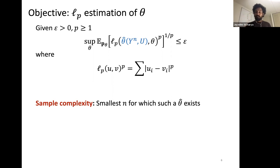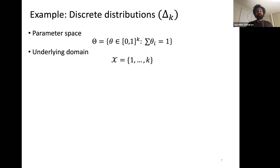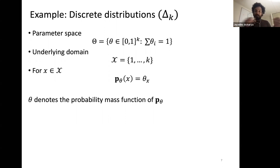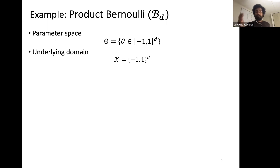Let's take a couple of examples. The first is discrete distributions, where the parameter space is the simplex of dimension k, the set of all non-negative vectors that add up to one, and p_theta(x) = theta(x). The second example is product Bernoullis, where the parameter space is [-1,1]^d and the domain is the Boolean hypercube of dimension d. For a given vector x_1 through x_d, p_theta is a product distribution where the probability that x_i equals one is (1 + theta_i)/2, so theta is the mean of each coordinate.